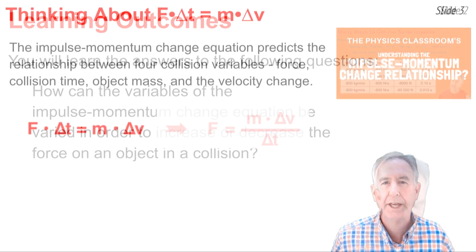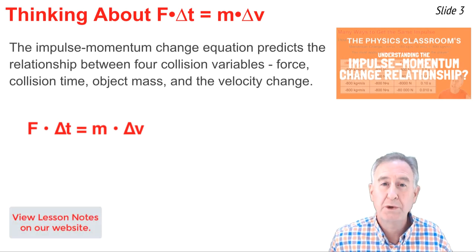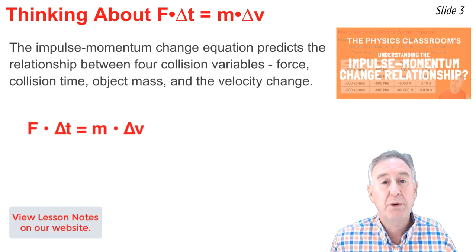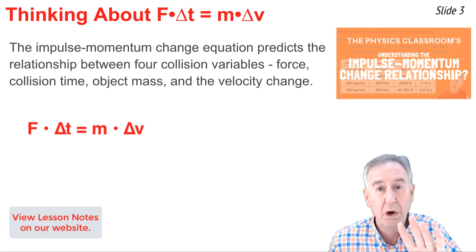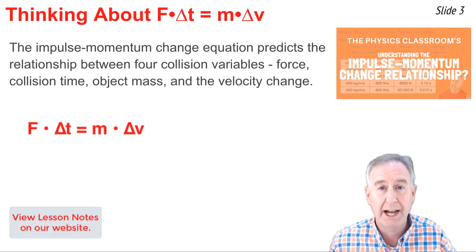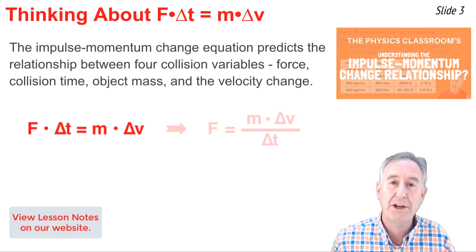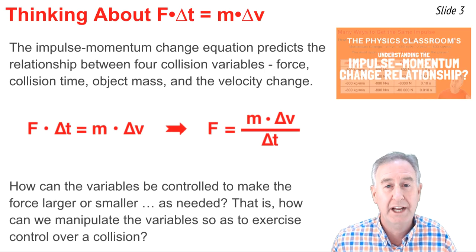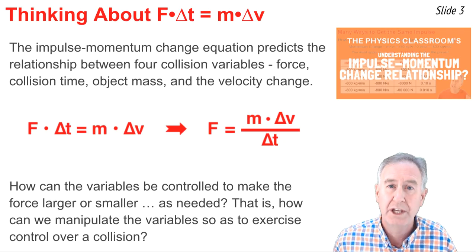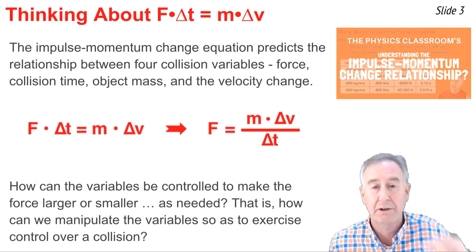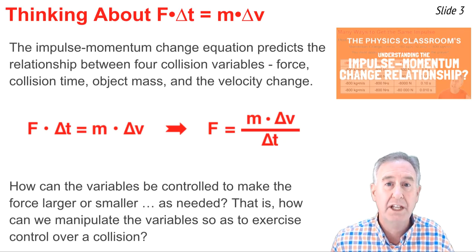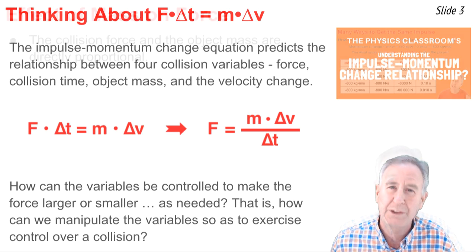In a previous video, we introduced the impulse-momentum change equation. The equation predicts the relationship between four collision variables: the force, the collision time, the object mass, and the velocity change of the object. We can rearrange the equation to put force by itself, and when done that way, we can better predict how you can manipulate the variables in order to increase or decrease the force — that is, how you can manipulate M delta V and delta T in order to exercise control over the collision.